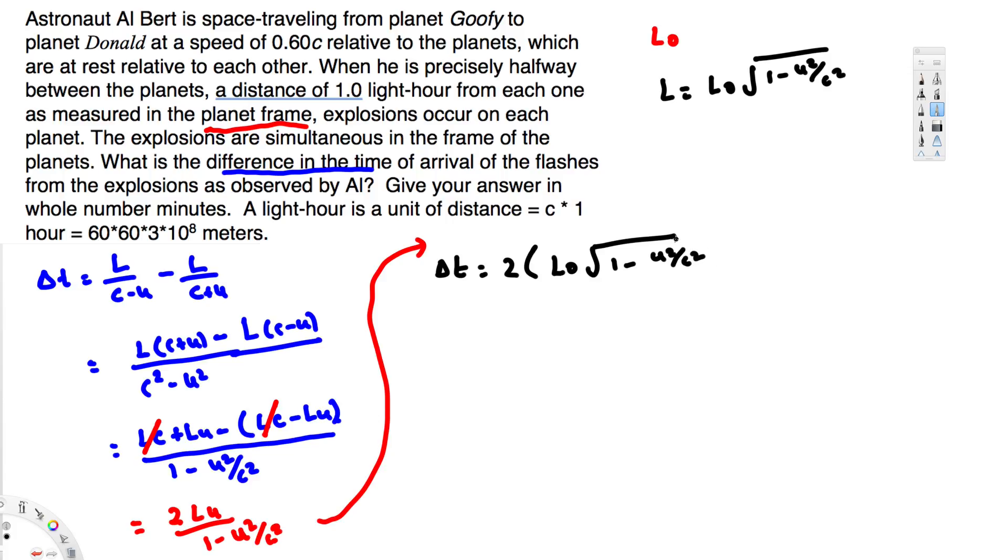And in the bottom, we are going to have 1 - U²/C². Now here we need to know L₀ and U in order to solve this problem. L₀ we know, that's one light-hour, and U is the speed, which is 0.6c.